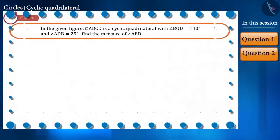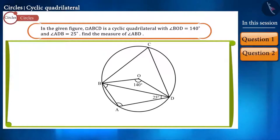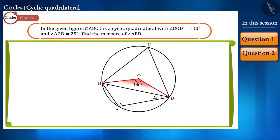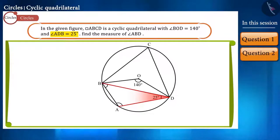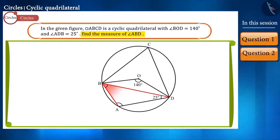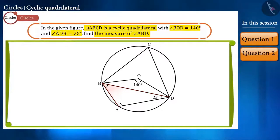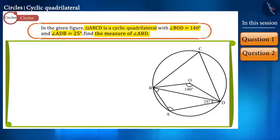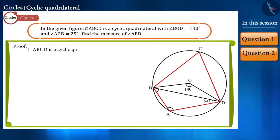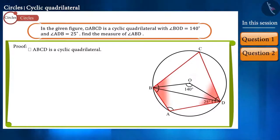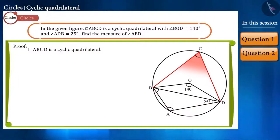Let's look at our next question. In the given figure, quadrilateral ABCD is a cyclic quadrilateral in which the value of angle BOD is 140 degrees and angle ADB is 25 degrees. Find the value of angle ABD. Let us first see what is given to us. ABCD is a cyclic quadrilateral, so the sum of each pair of opposite angles is 180 degrees. By this property, we will get these two equations.